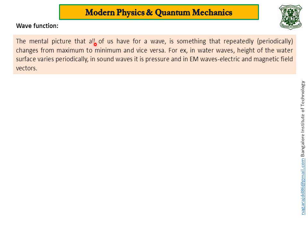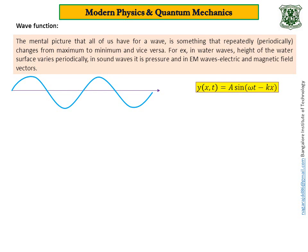The mental picture that all of us have for a wave is something that repeatedly or periodically changes from maximum to minimum and vice versa. For example, in water waves, height of the water surface varies periodically. In sound waves, it is pressure, and in electromagnetic waves, it is electric and magnetic field vectors. These variations are represented by a sinusoidal curve. This is the equation for a progressive wave: y(x,t) = A sin(ωt - kx).